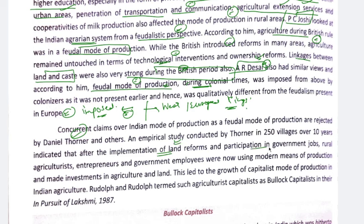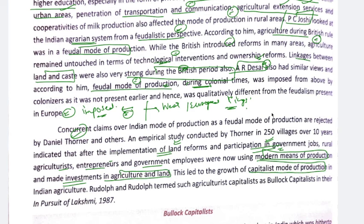Daniel Thorner countered, saying that land reforms were introduced, participation in government jobs increased, some money came into agriculture, and rural agriculturalists, entrepreneurs, and government employees used modern means of production — mechanization of farming, investment in cash crop cultivation. So because of investment in agriculture and land, a capitalistic mode of production developed — not a feudal mode of production. So it was not feudal mode of production, but capitalistic mode of production.